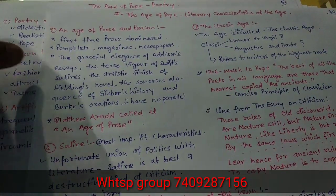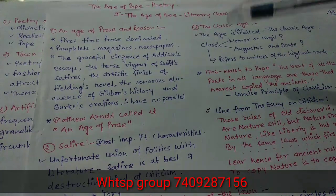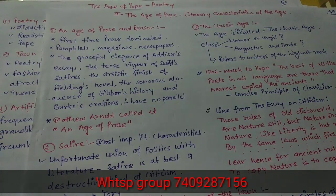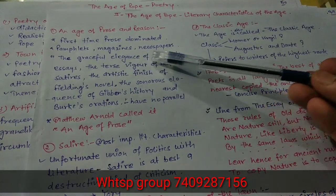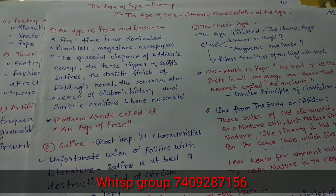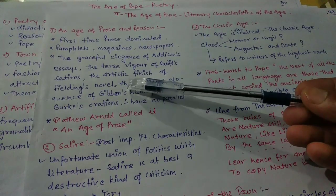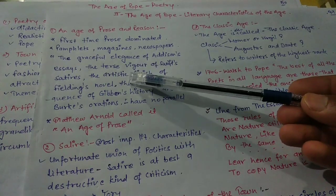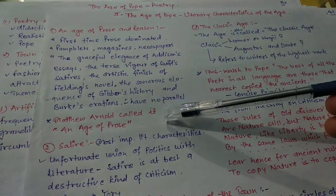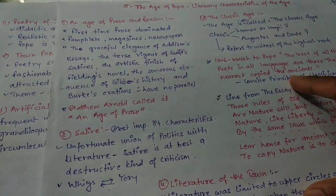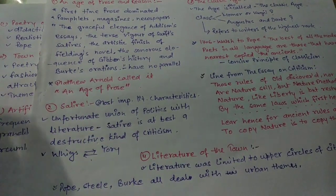This Age saw the first time prose dominated. Before the Age of Pope, drama and poetry were dominating English literature. Pamphlets, magazines, and newspapers helped grow prose. The graceful elegance of Addison's essays, the terse vigor of Swift's satire, the artistic finish of Fielding's novels, and the sonorous eloquence of Gibbon's history and Burke's writings have no parallel in other ages. Matthew Arnold called it an Age of Prose.